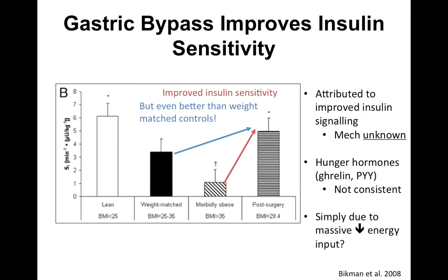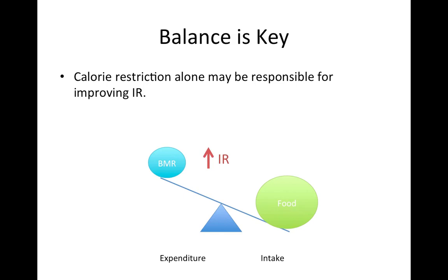It's possible that simply the decrease in energy input is responsible for these changes. After bypass surgery, patients can't eat as much, so calorie intake goes down, and that might be responsible for helping tip the balance in favor of improved insulin sensitivity. The electron transport chain never actually stops — we have a basal metabolic rate that uses ATP, so there's a little bit of flow trickling through as well as some leak through the membrane. In a situation where insulin resistance develops, food intake simply outweighs the basal metabolic rate. What might happen with bypass surgery is that food intake simply decreases, and the balance would then tip in the opposite direction and improve insulin sensitivity.